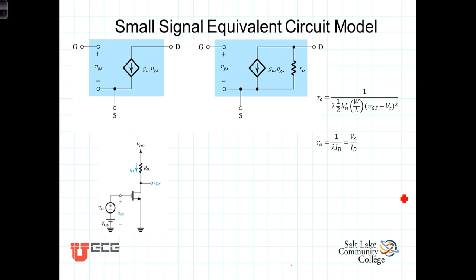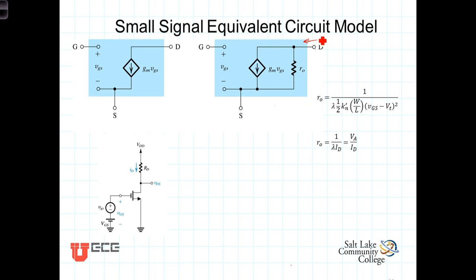We modeled this with a finite resistance R0 between the drain and the source. So as VDS increases, I sub D increases also. It's not just this constant dependent source G sub M VGS, but as it increases, this R0 term provides a path for the increased current to go. It accounts for the fact that I sub D increases as VDS increases.